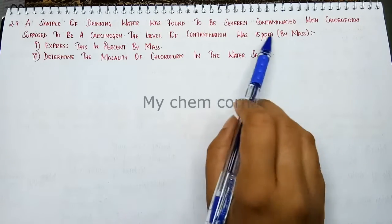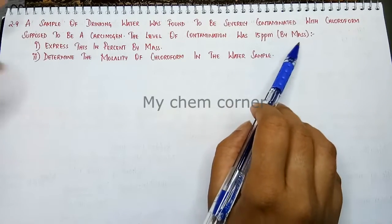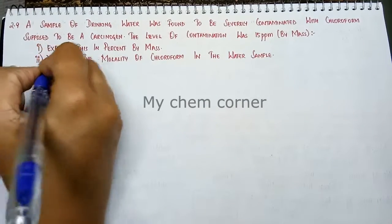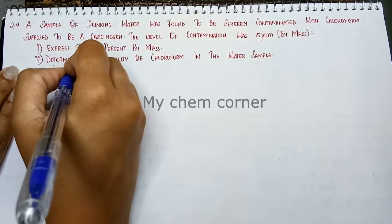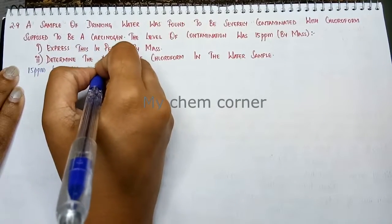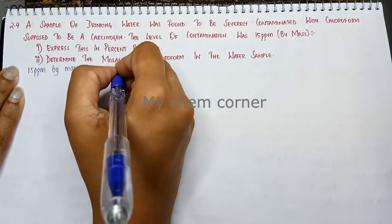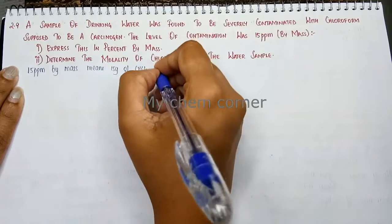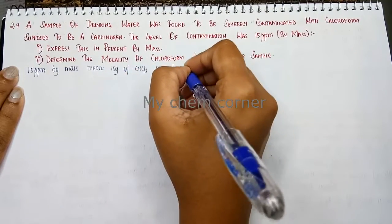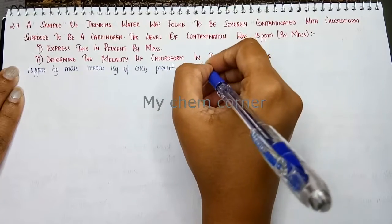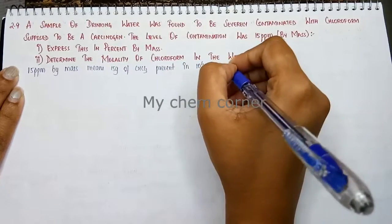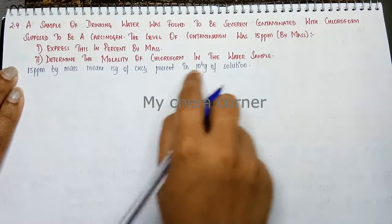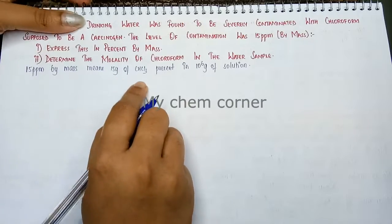First, let's convert this ppm by mass. At 15 ppm by mass, this means 15 grams of chloroform — CHCl₃ — present in 10⁶ grams of solution. That's the conversion. So we know the grams of solution and the grams of solute.